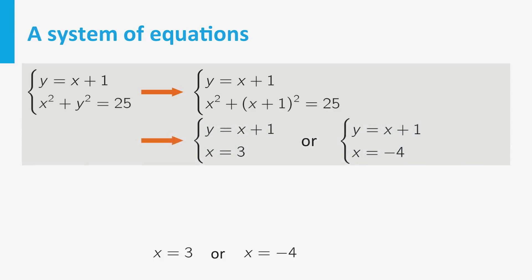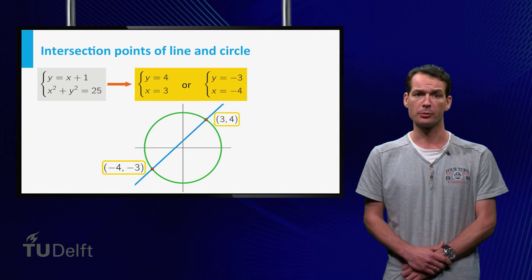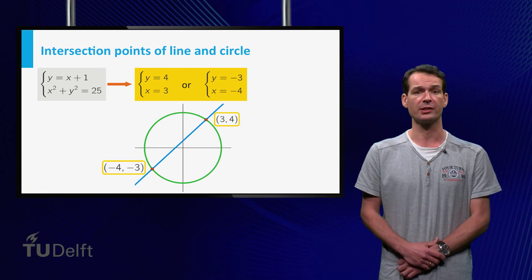Each of these solutions leads to another, simpler system of equations. Now, substituting x equals 3 in the equation y equals x plus 1, we find y equals 4. And in the same way, substituting x equals minus 4 gives y is equal to minus 3. Now we found the coordinates of both points of intersection.